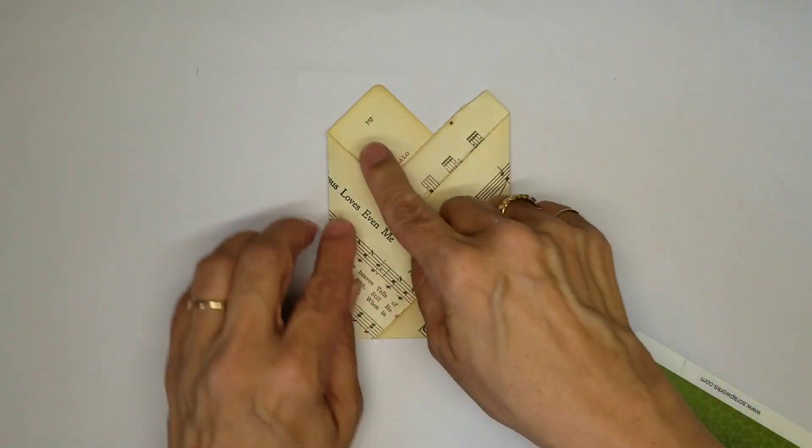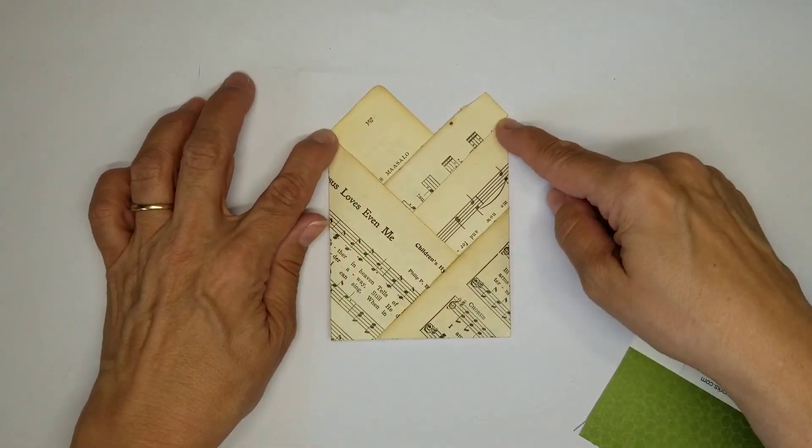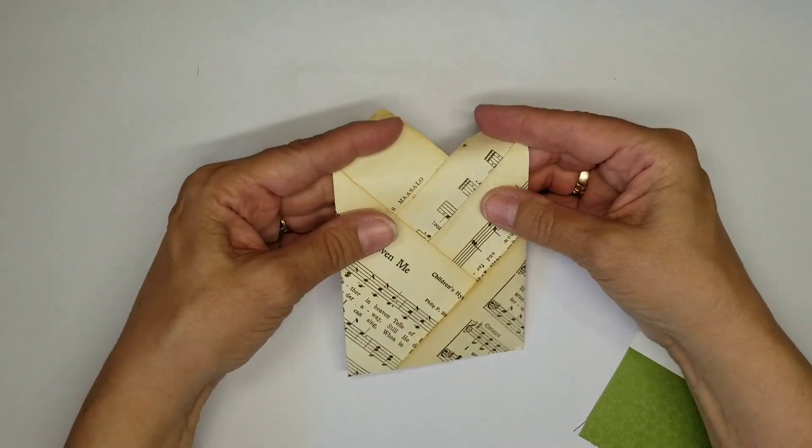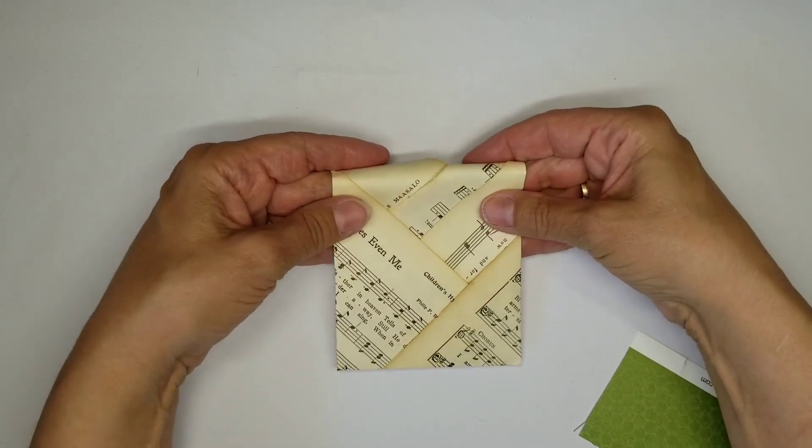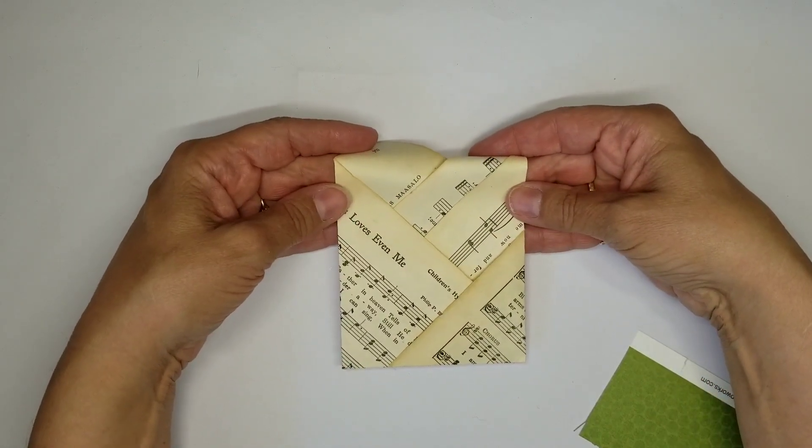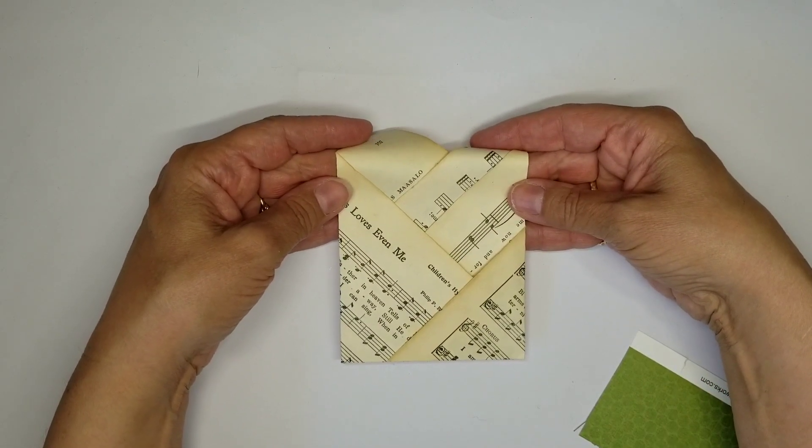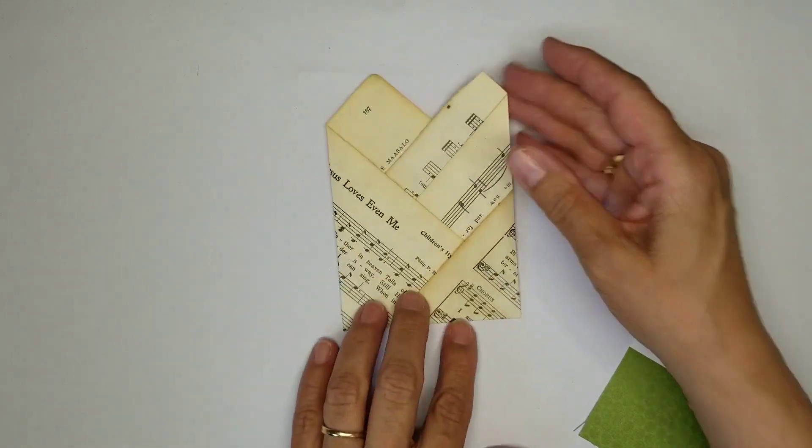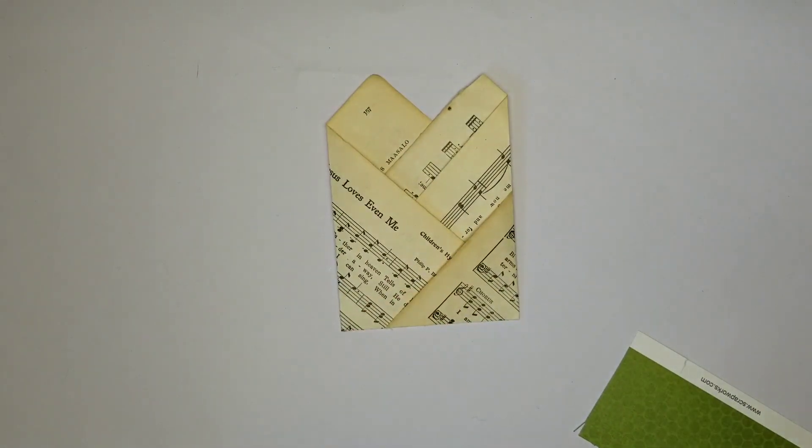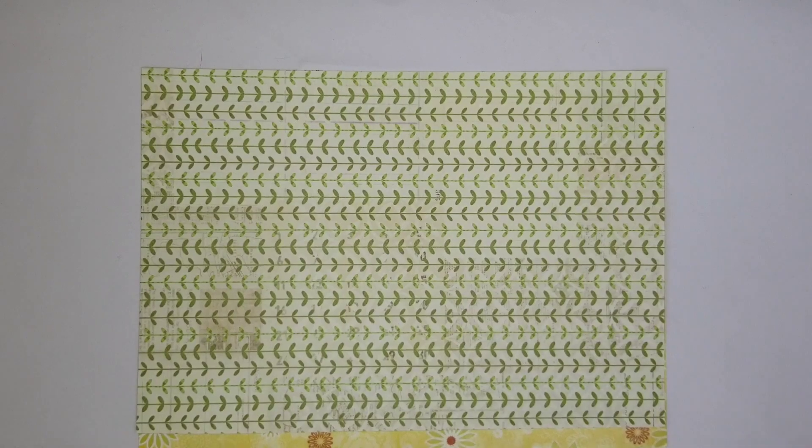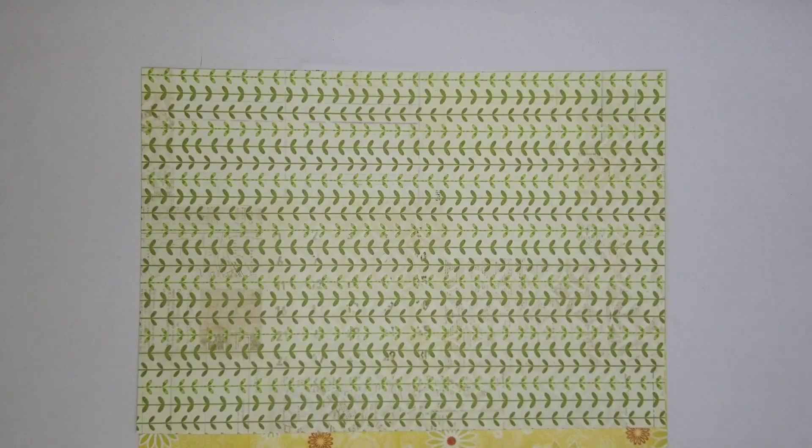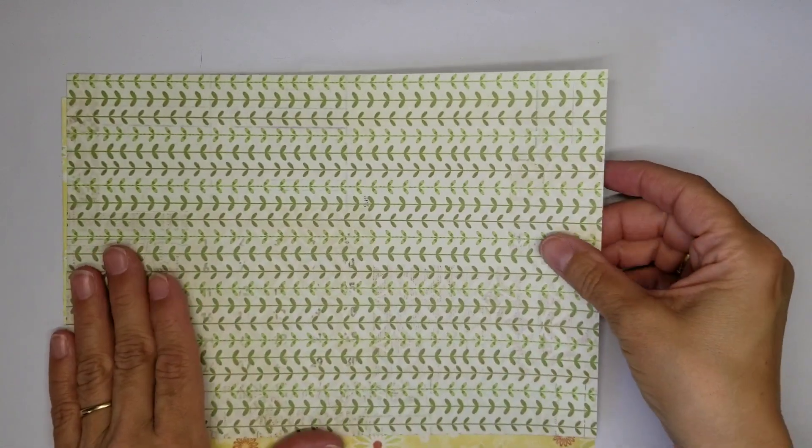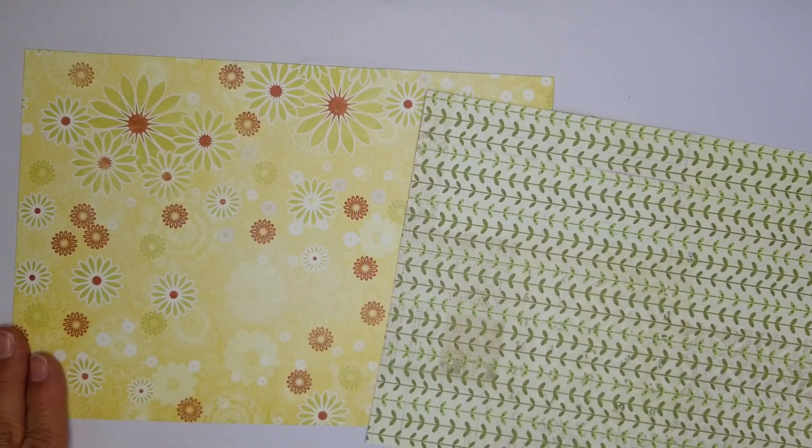Some people like to trim off the top corners here, but I will let Clarice decide whether she wants these little ears or not. I gave her a choice of a few different scrapbook papers to choose from and she chose these two.